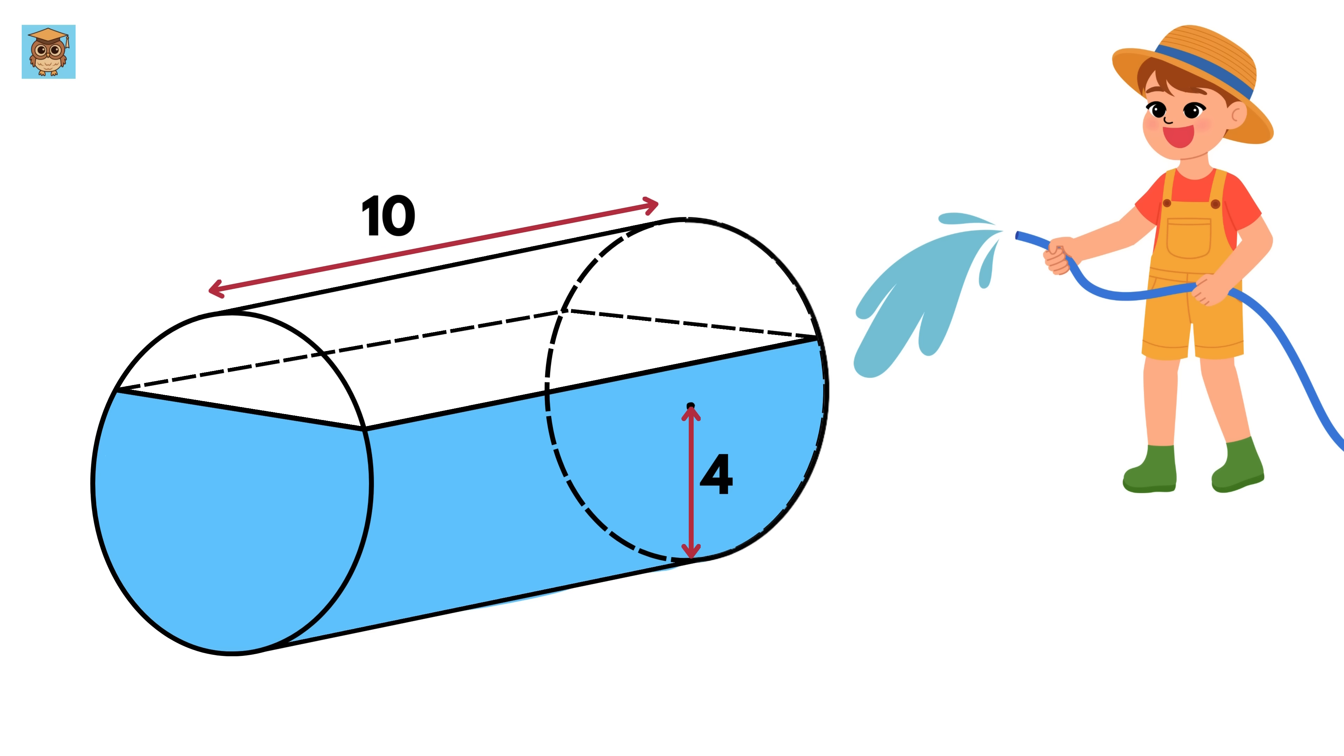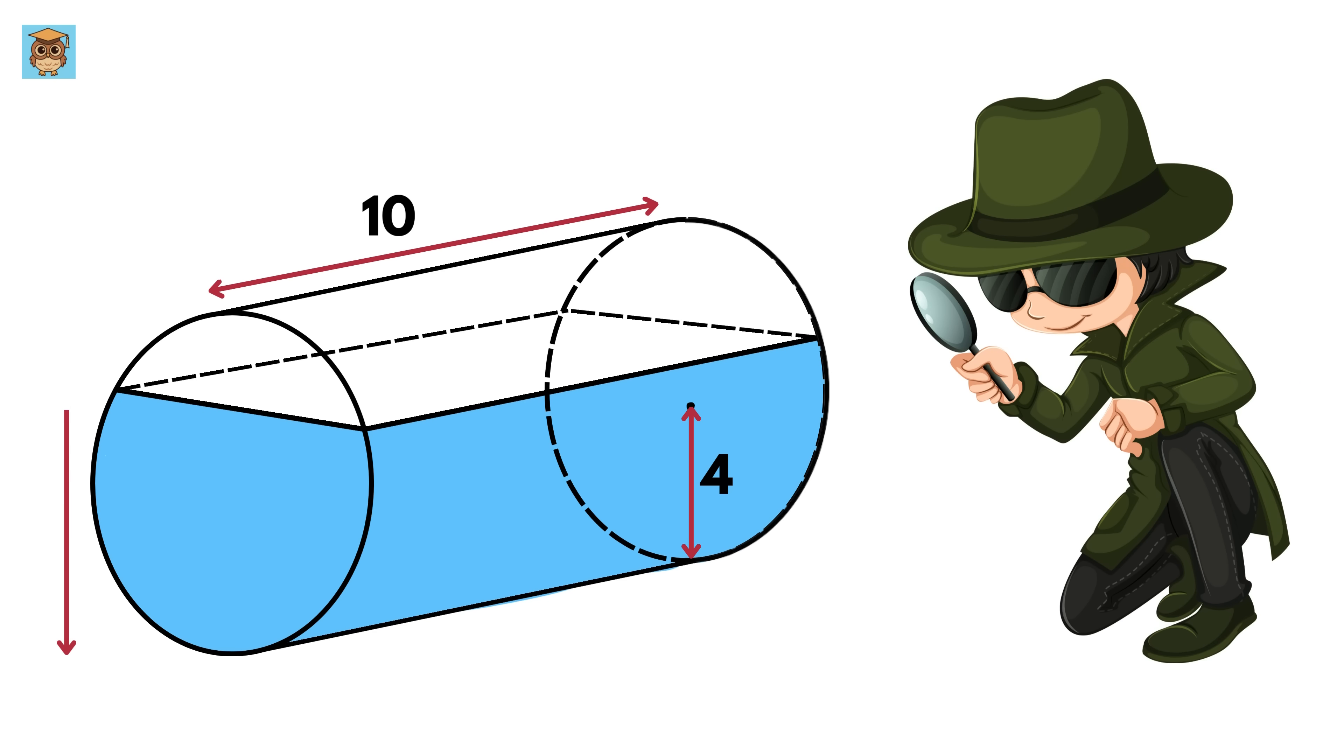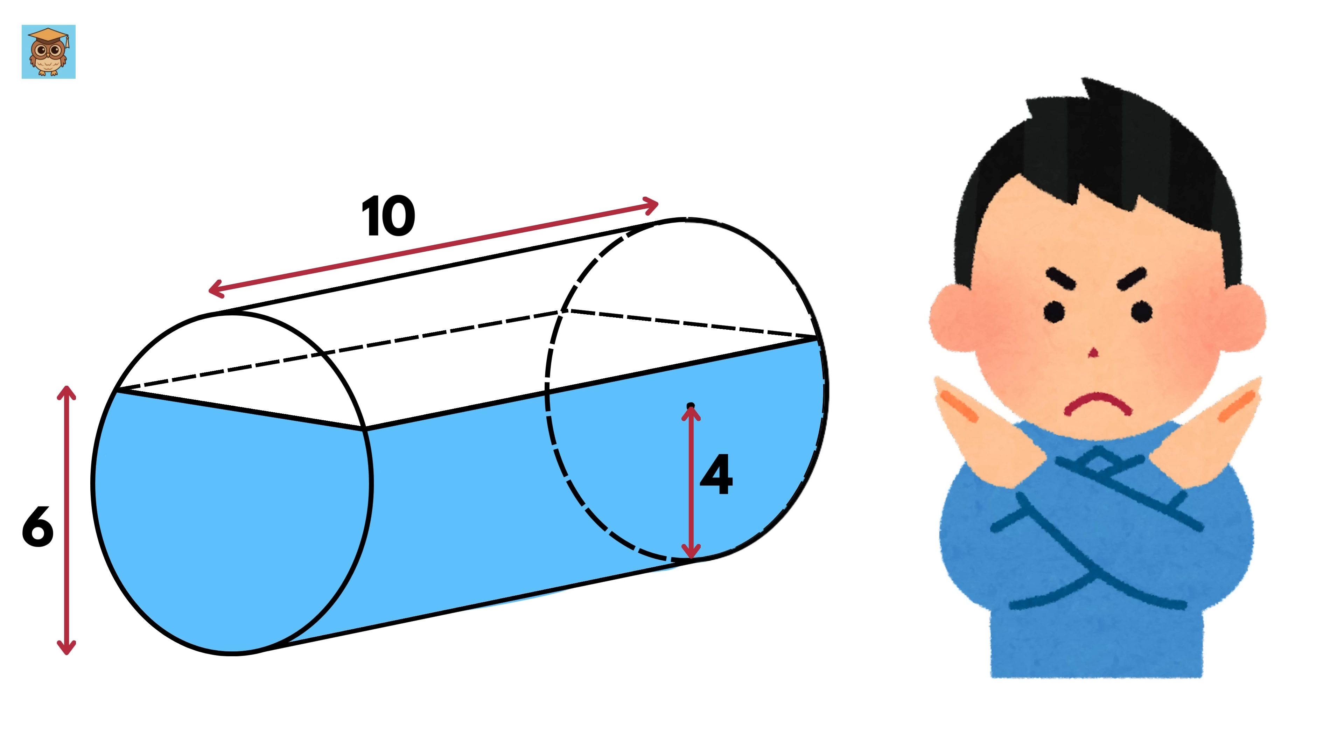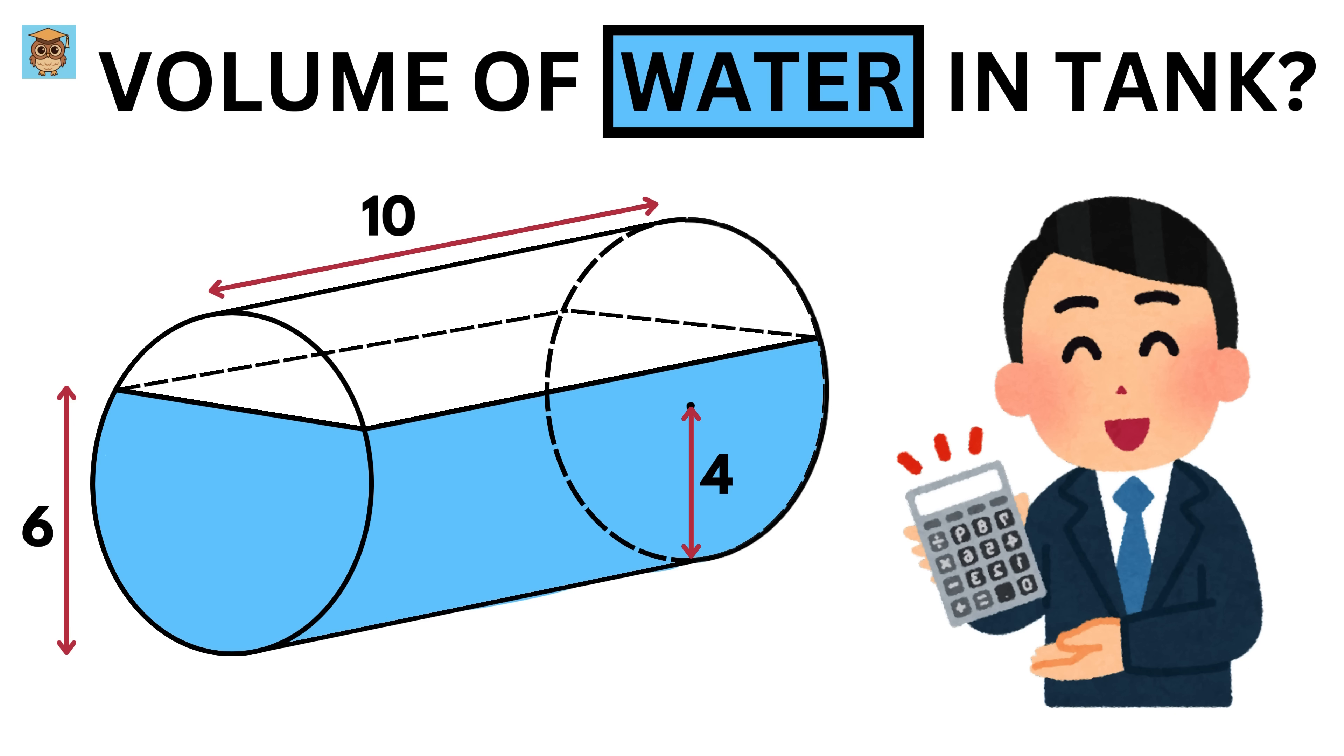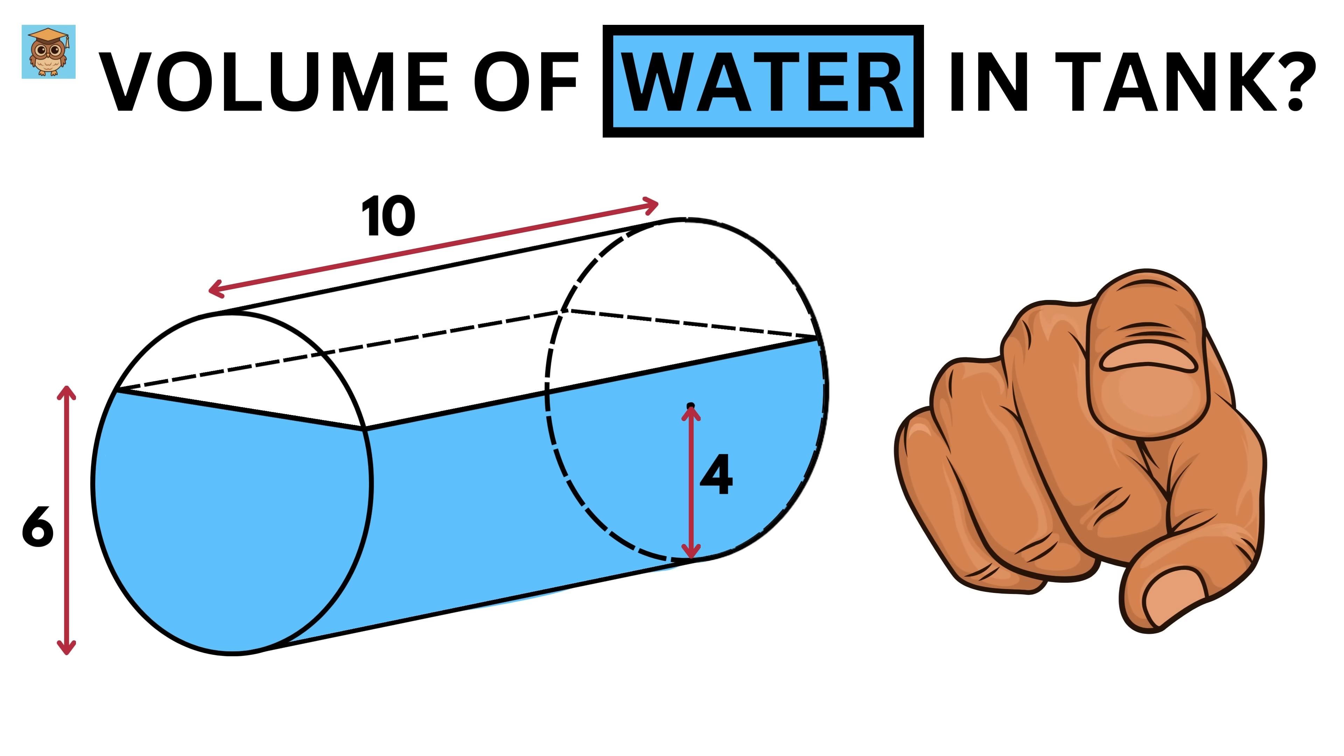Now when you're almost done you stop to check how much water is in the tank. The water level has reached 6 meters height but it hasn't completely filled the cylinder yet. Now someone asks you to calculate the exact volume of water in the tank at this moment. So can you solve it?